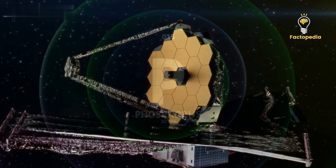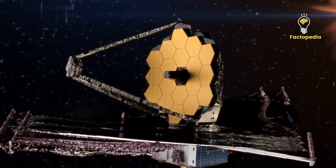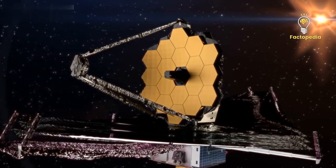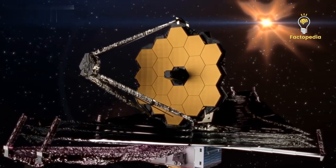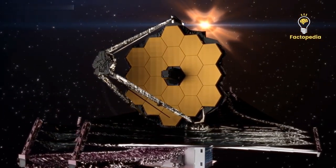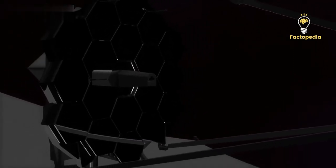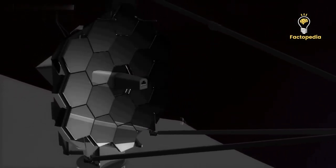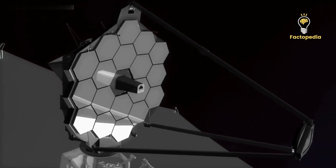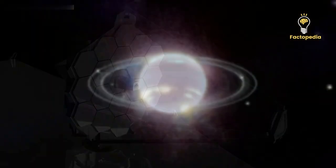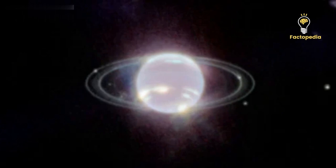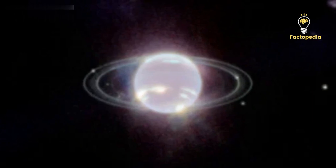You might be wondering, is the image we're seeing an exact representation of what the Webb telescope observed? Surprisingly, it isn't. The final picture we admire is the result of merging several raw images, each captured by the Webb telescope using different infrared wavelength filters. These raw images undergo a process of post-processing to refine and enhance the final result.